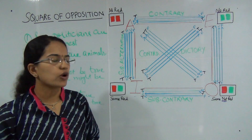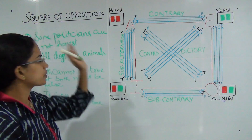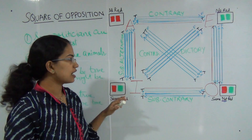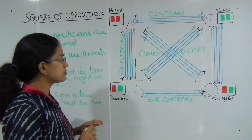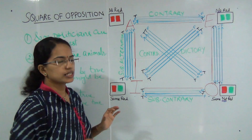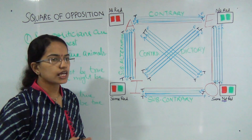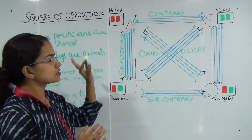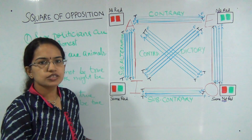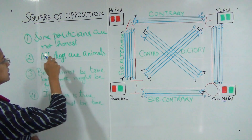In the previous session, we have already talked about the concept of square of opposition. In this class, we would be covering some basic examples to understand the square of opposition and deal with the questions of square of opposition. So let's first start with the first question here.